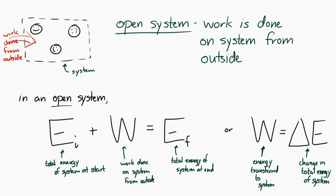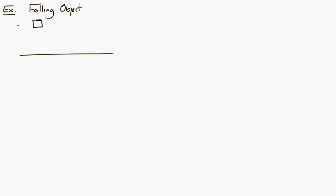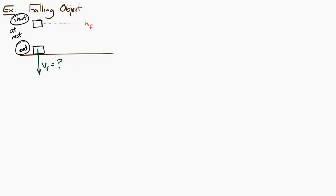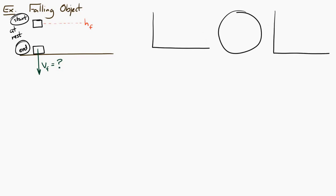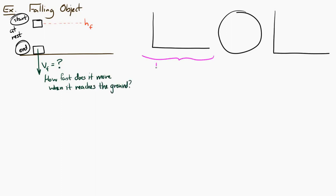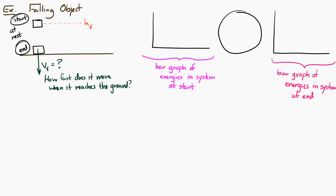Let's try applying this to a specific system — a falling object. We have an object starting at some height, starting at rest, and then it falls toward the ground. We want to know how fast it's moving when it reaches the ground. One technique we use is to draw something called an LOL chart — it's called that because it looks like 'LOL' before you put any information in it. On the left L we draw a bar graph of the different types of energy the system has at the beginning, and on the right L we draw the types of energy at the end. In the O we indicate what's in our system.